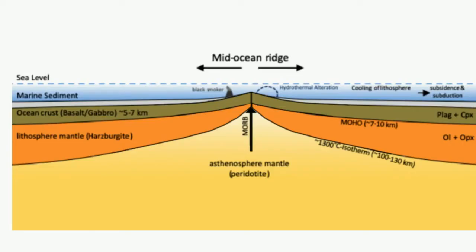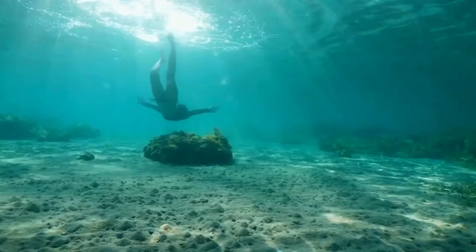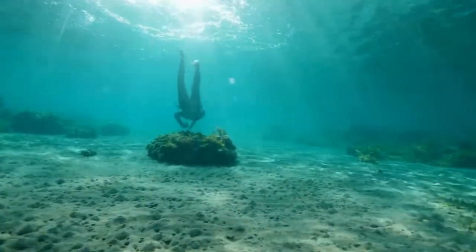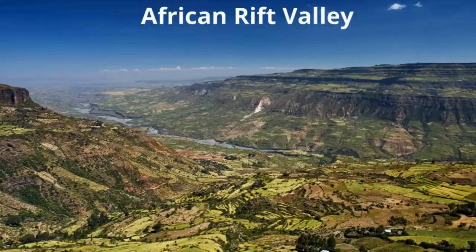Most of these divergent boundaries are located on the ocean floor. However, rift valleys may also form where the continents are separated by plate movement.